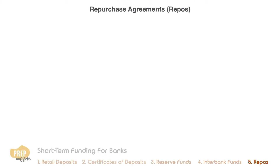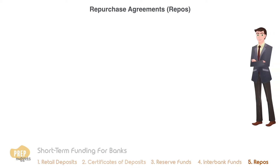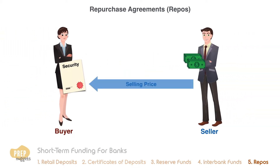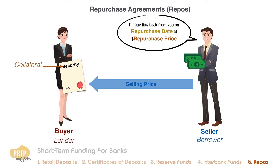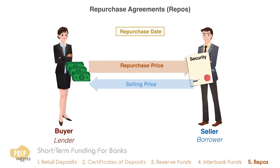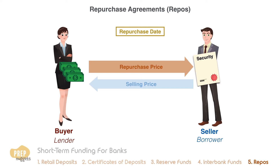Repurchase agreements are another important source of funding not only for banks but also for other market participants. A repurchase agreement, or repo, is an arrangement by which one party sells a security to a counterparty with a commitment to buy it back at a later date at a specified price. In effect, the buyer is actually lending funds to the seller with the security as collateral. On the repurchase date, the seller — the borrower — pays the lender the repurchase price in order to obtain back the collateral security.